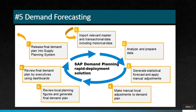Then we have demand forecasting. SAP has SAP Integrated Business Planning, which uses machine learning to analyze historical sales data and predict future demand for products and services. This helps businesses optimize their inventory, production, and supply chain management.